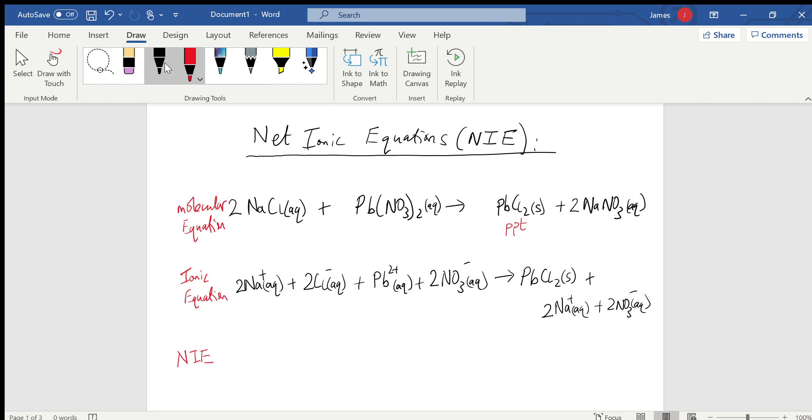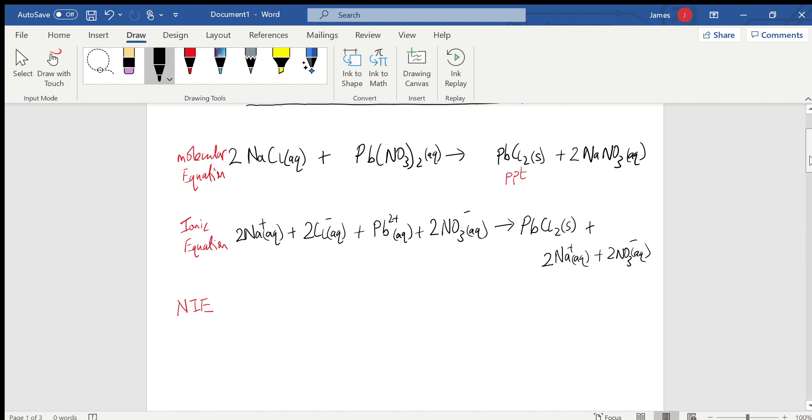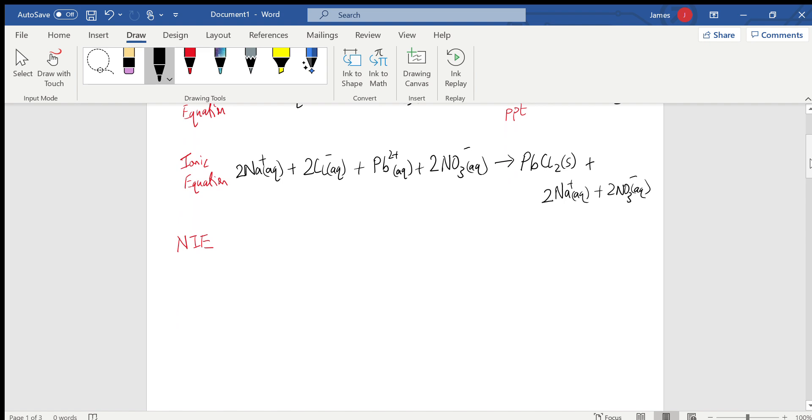So the net ionic equation: we take the ionic equation and we cancel spectator ions. A spectator ion is anything that appears both as a reactant and a product that's the same. Essentially, the best way to do this is to look at your precipitate, which in this case is here.